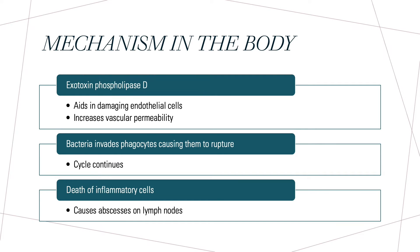The bacterium starts off by producing an exotoxin called phospholipase D that aids in damaging endothelial cells and increases vascular permeability, therefore enhancing dissemination of the bacteria. In other words, this toxin produced by the bacteria helps it spread, replicate, and invade body cells by damaging their integrity. The bacteria is able to invade phagocytes in the lymphatic system, eventually causing them to rupture, release the bacteria, and then continue that cycle. As the bacteria continue replicating and causing the death of inflammatory cells, abscesses on the lymph nodes begin to form and cause the characteristic symptoms that we see in goats.